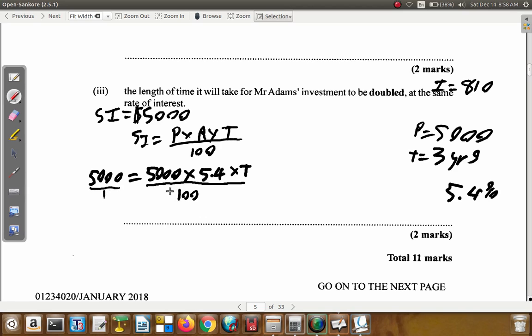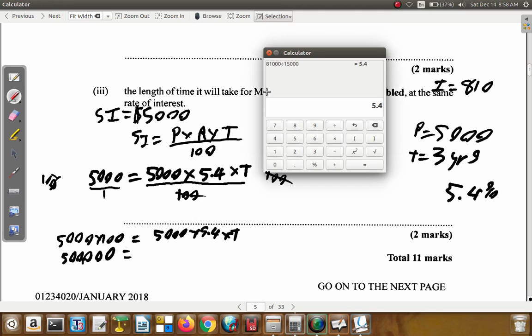This is 5,000 over 1. Multiply both sides by 100. 100 will cancel itself. We'll have 5,000 times 100 on the left equals 5,000 times 5.4 times T. On the left you get 500,000 equals 5,000 by 5.4. 5,000 multiplied by 5.4.